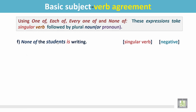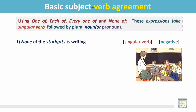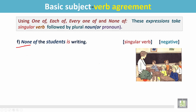Example F: None of the students is writing. In this picture we see all the children, or the students, are listening to their teacher. They are not writing. The sentence again begins with none. It is followed by a plural noun, students. This plural noun is followed by a singular verb, is.